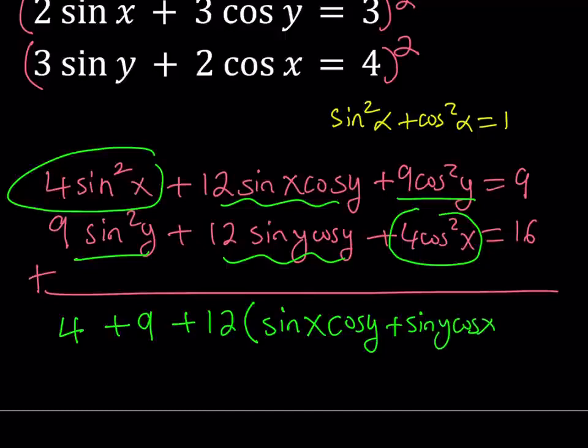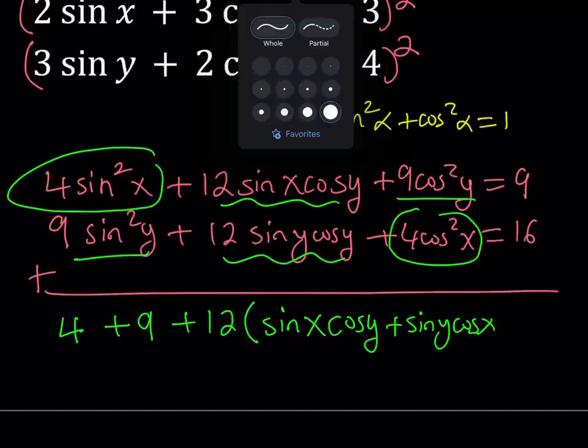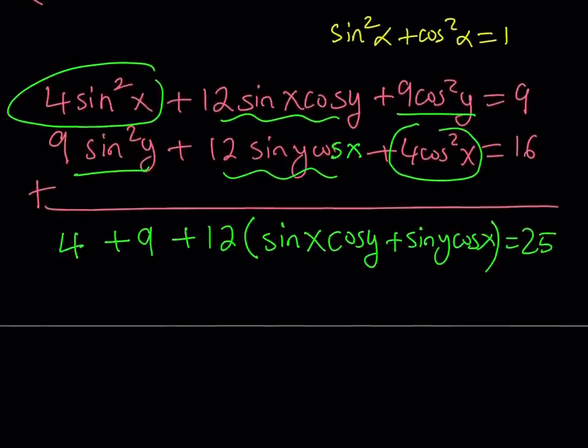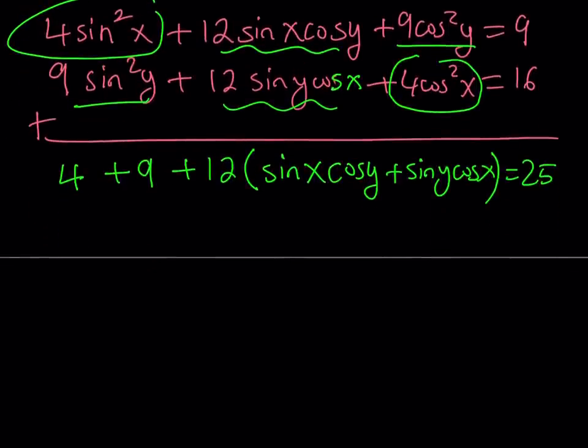And then these two terms basically have the same coefficient, so I can just go ahead and factor out a 12 and see what happens from there. Sine x cosine y plus sine y cosine x. By the way, this should be a cosine x, not a cosine y. So, let's go ahead and fix that. And then on the right-hand side, I do have 9 plus 16, which is equal to 25. So 4 plus 9 is equal to 13. If I subtract 13 from 25, I get 12.